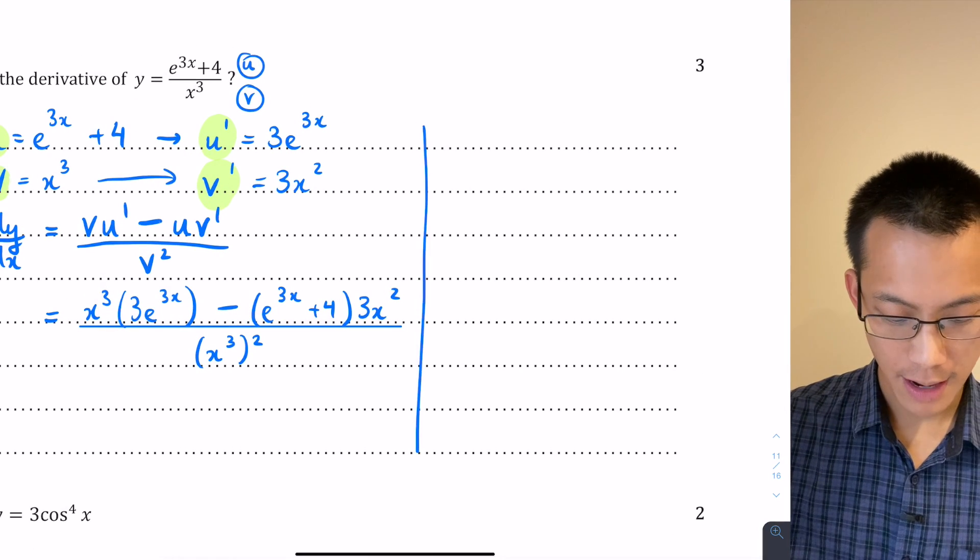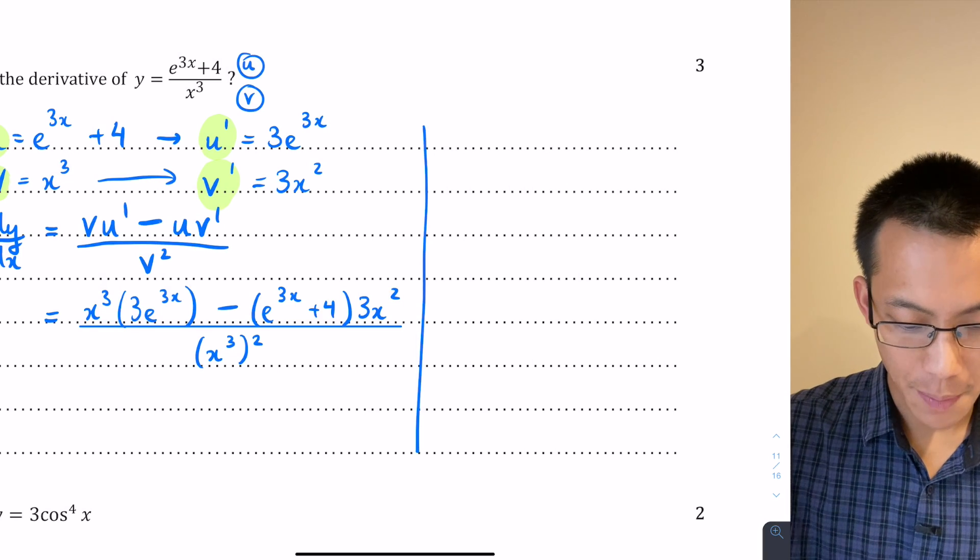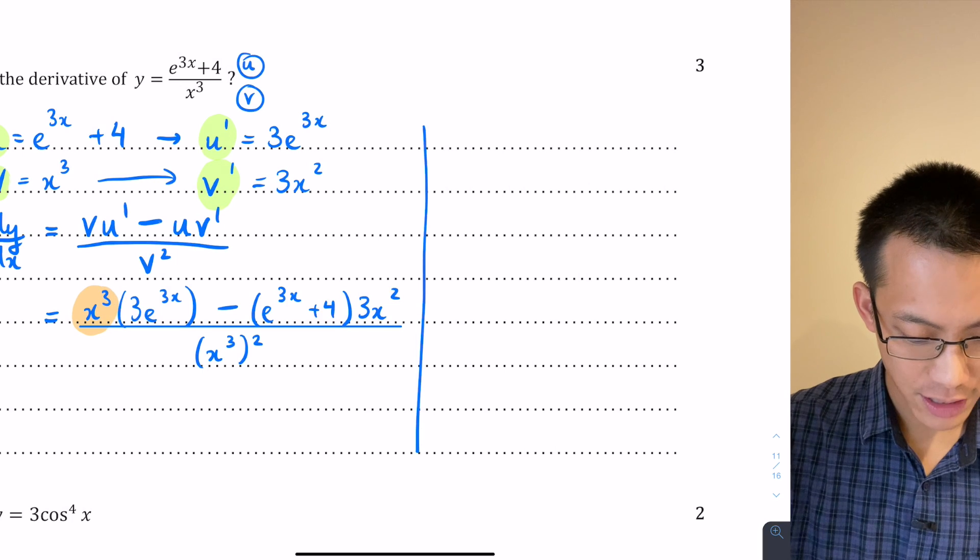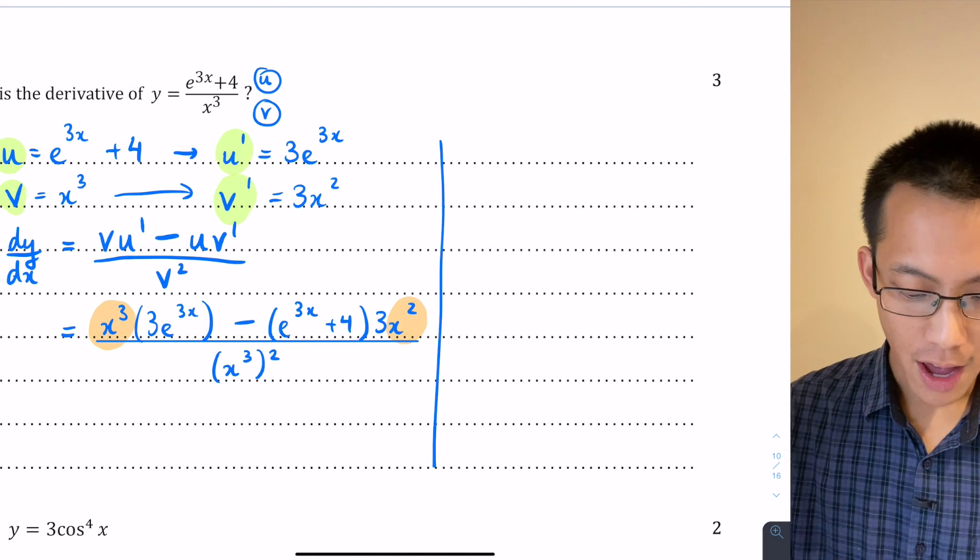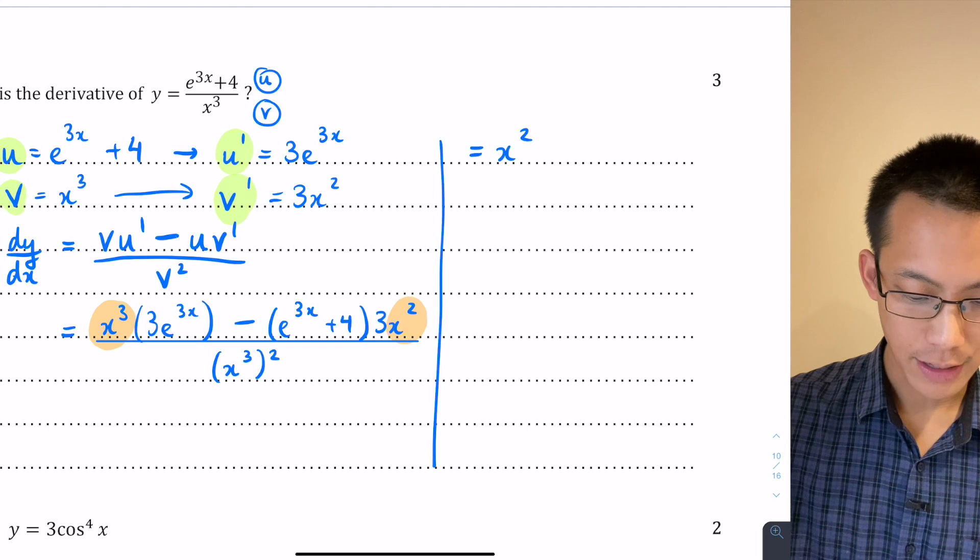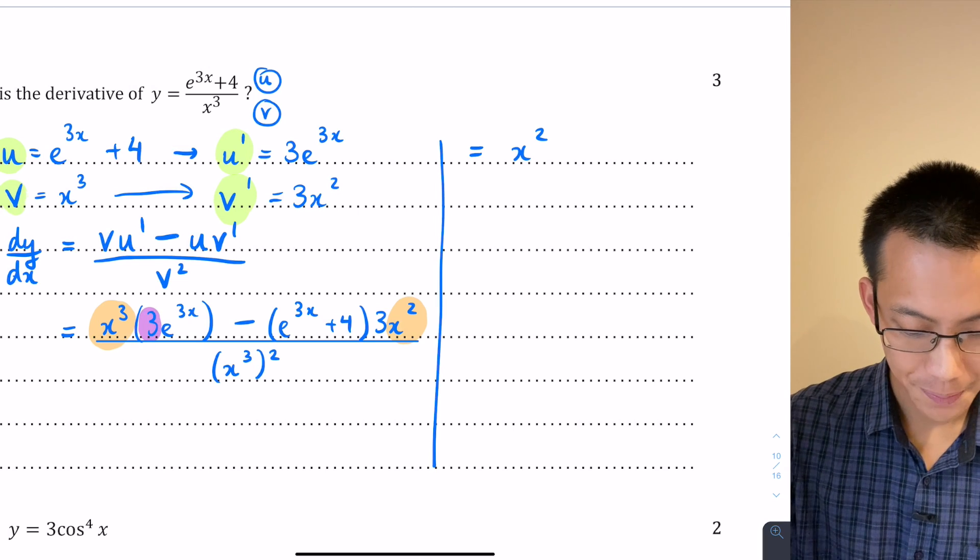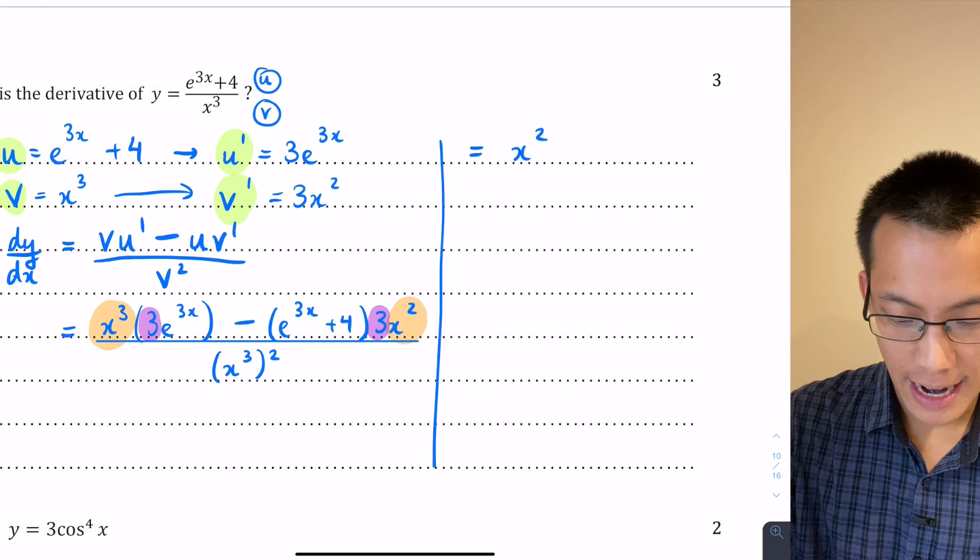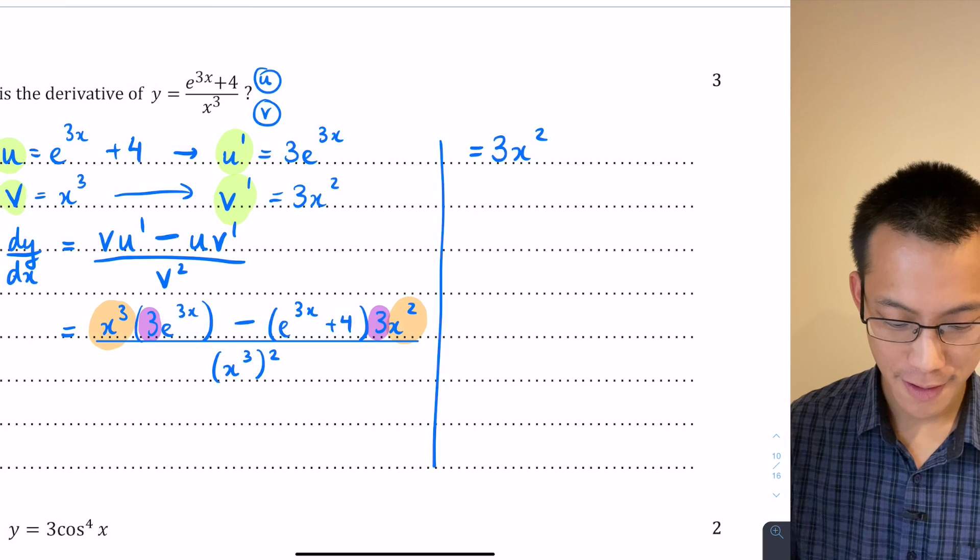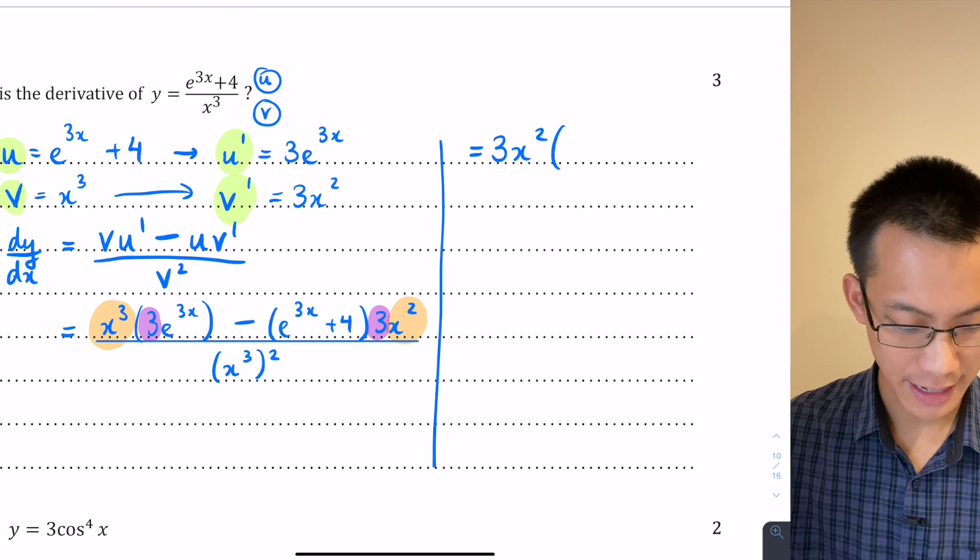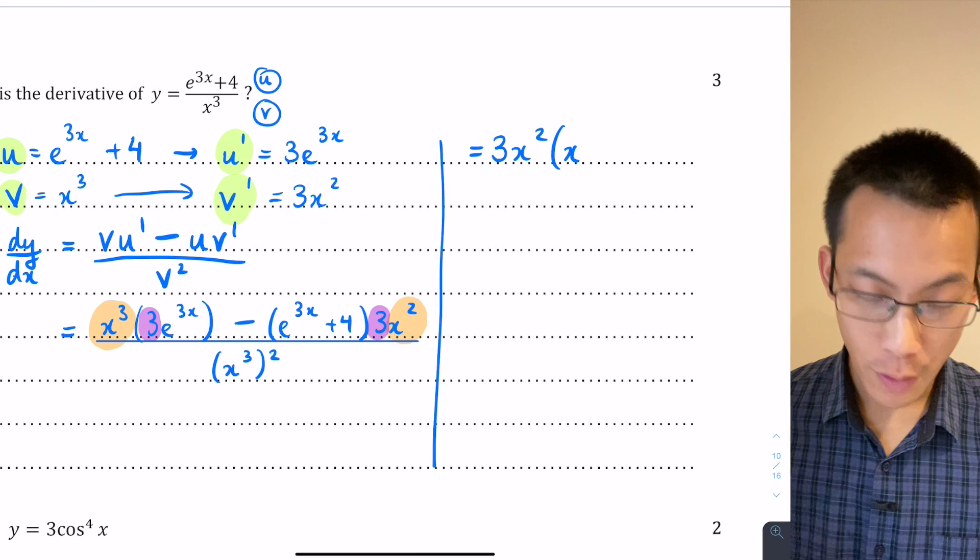I can do a bit of simplification here. For instance, I notice on the top of my fraction, on my numerator, I've got an x cubed and an x squared over here. So there's a common factor at least of x squared. I'm going to write that out the front. That's not the only common factor you can see on the top. There's also a 3 here and a 3 here. So I can take out 3x squared from both of the terms in the numerator. When I do that for the left hand function, I'm going to be left with, let's write a bracket here, I took out x squared. So x cubed divided by x squared leaves me with an x.